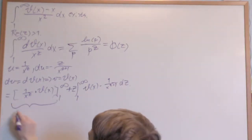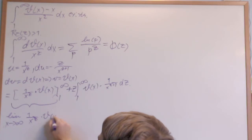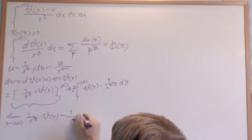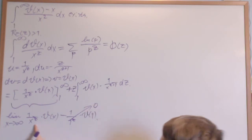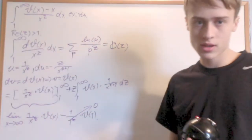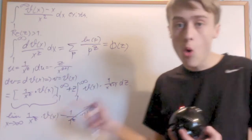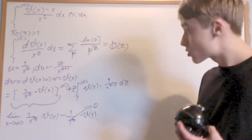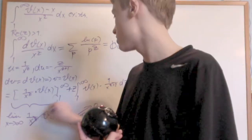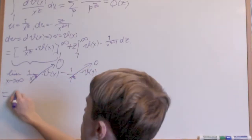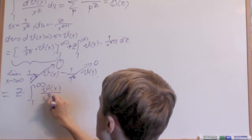Let's evaluate the boundary term. The limit as x approaches infinity of 1 over x to the z times theta of x, minus 1 over 1 to the z times theta of 1. Theta of 1 is 0, so that's gone. For the other term, since real part of z is bigger than 1 and theta of x is O(x), x grows drastically slower than x to the z, so that limit is also 0. This simplifies to z times the integral from 1 to infinity of theta of x over x to the z plus 1 dx.